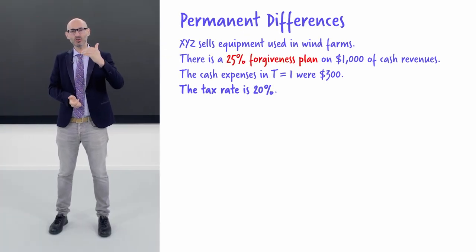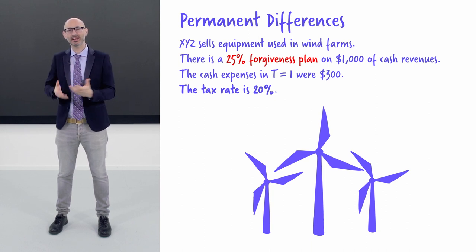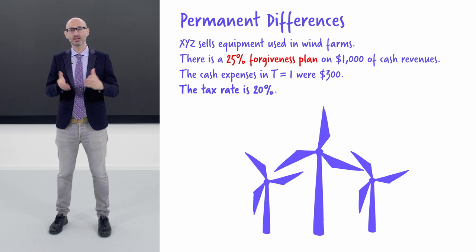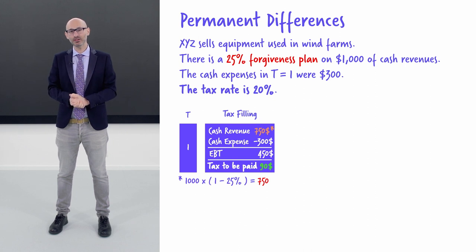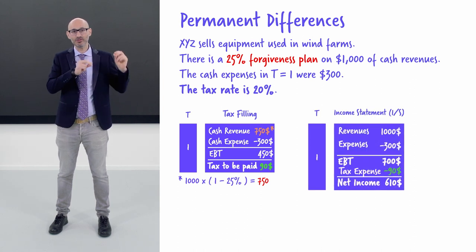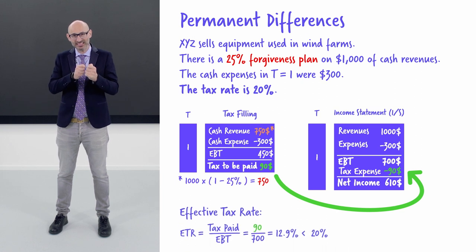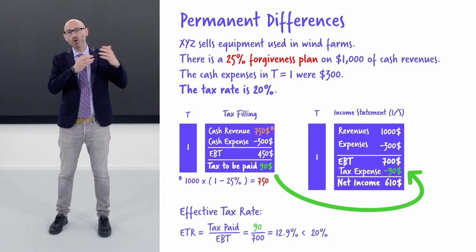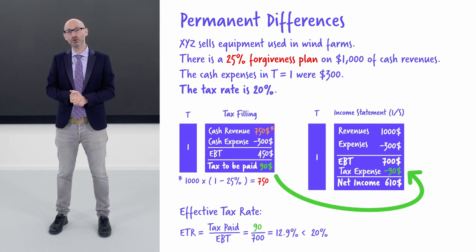Assume you are selling wind farms and the government forgives 25% of your revenues for taxation purposes. Your cash revenues under tax filing are only 750 from a total of 1,000. However, on the income statement, your revenues are still 1,000. So your effective tax rate is lower and you pay only a tax of 90 at the effective rate of 12.9%.